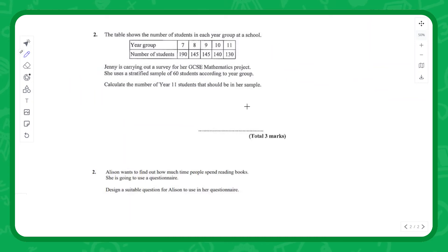Let's look at a couple of exam-style questions. We've got a table showing the number of students in each year group at a school. Jenny is carrying out a survey for her GCSE Mathematics project. She uses a stratified sample of 60 students according to year group. Calculate the number of year 11 students that should be in her sample. This is very similar to the example we looked at on the previous page. We can see here we've got 130 year 11s in total.